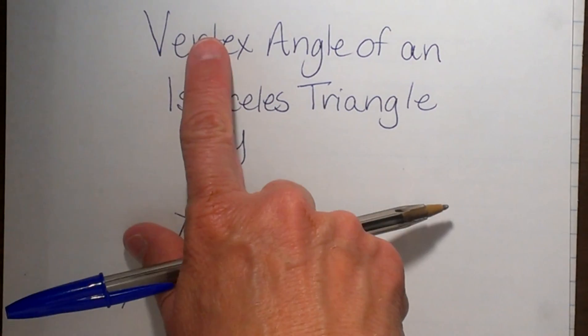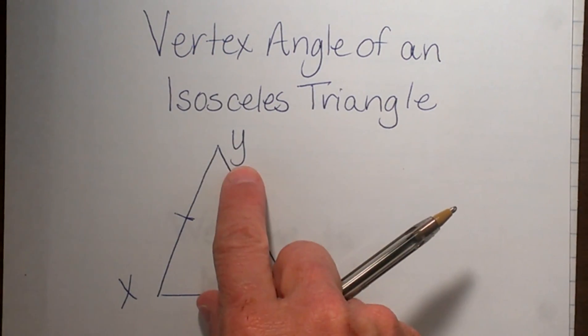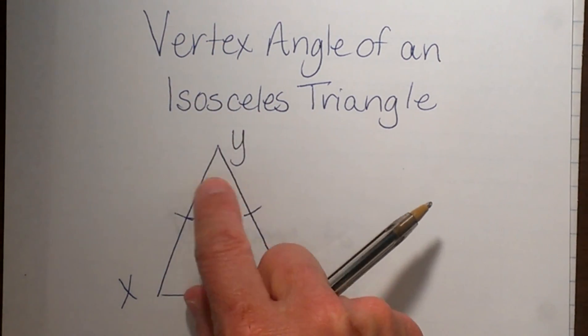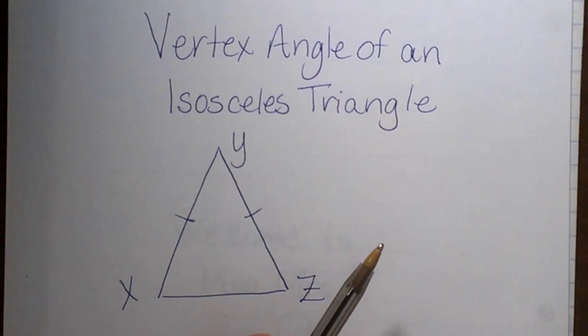The vertex angle is the angle that is formed between the two congruent sides. So in this case, y is our vertex angle and it has a cool little property.